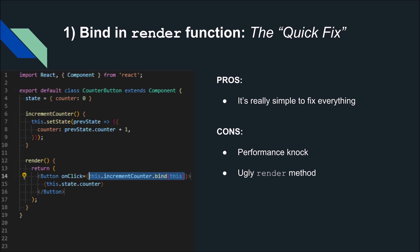The first solution is binding in the render function. In the render function we return the button, and on the onClick event handler you just bind 'this' to it right there. The pro is it's super easy — you just add .bind(this) to your event handler and it works. The con is a performance hit: every time props change and you re-render this button, it has to rebind 'this' to the event handler. Also, render is for displaying things, not for calculating things — so keep that stuff separate.